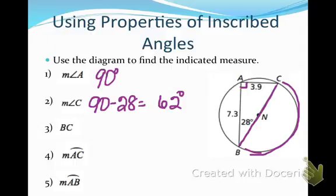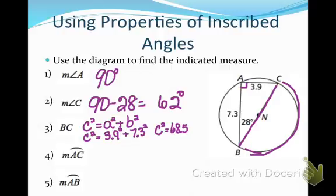Now I want to find the length of chord BC. Well, it's a right triangle and I know two sides, so I'm going to use the Pythagorean theorem. And I'm going to say C squared equals A squared plus B squared. C squared has to be the side I'm trying to find, which is my diameter, equals 3.9 squared plus 7.3 squared. I'm going to plug that into my calculator, and I'm going to get that C squared equals 68.5, but I don't want C squared, I want C. So I'm going to take the square root of both sides, and I'm going to get that C, or my chord CB, is 8.28 units long.